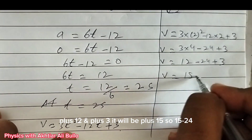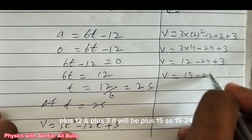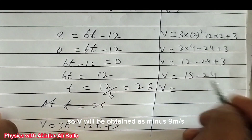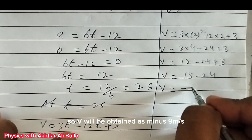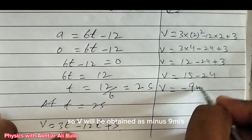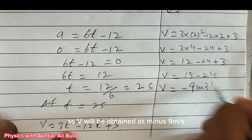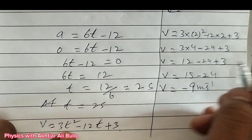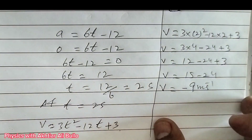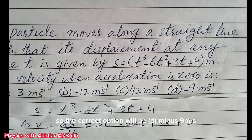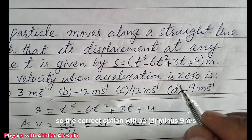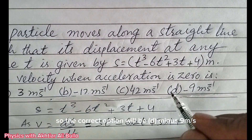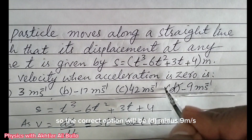So 15 - 24 gives v = -9 meter per second. The correct option is d: -9 meter per second.